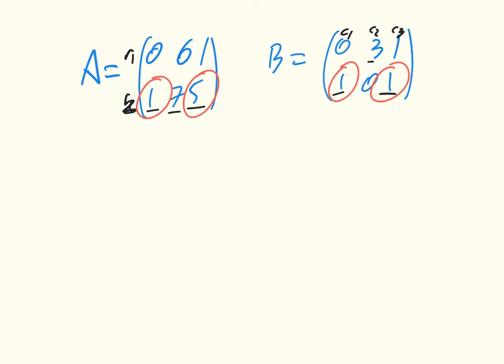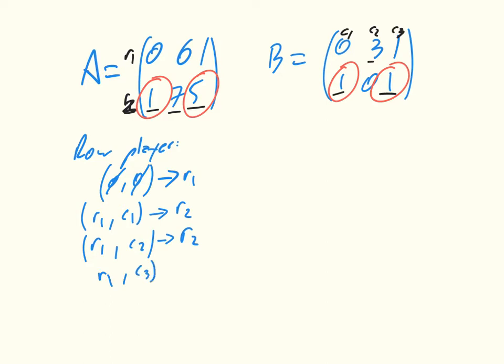Now, let's consider the following strategy. For the row player, we have that when there's no history, we play R1. So the first move, play R1. And then if the other player plays C1, then play R2. If the other player plays C2, also play R2. But if the other player plays C3, then also play R2. So in essence, this strategy is just the row player starts by playing R1 and then plays R2.